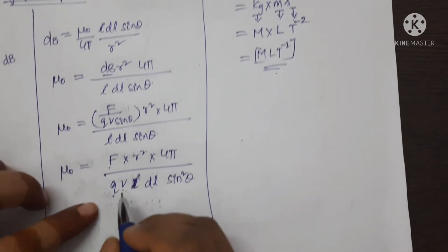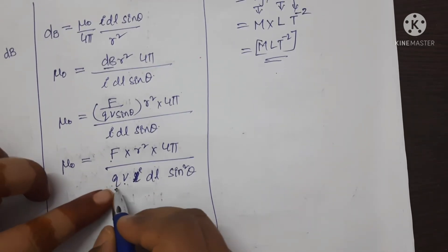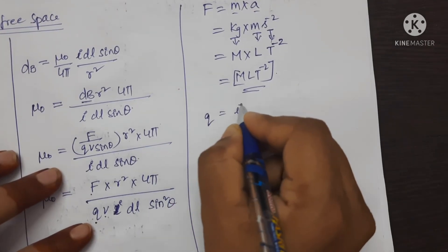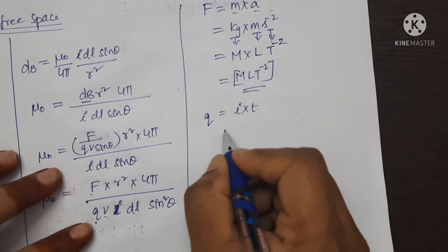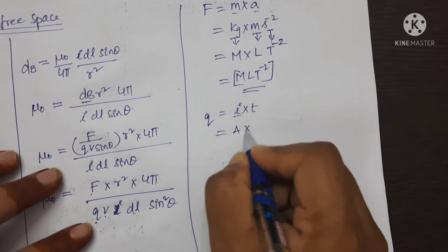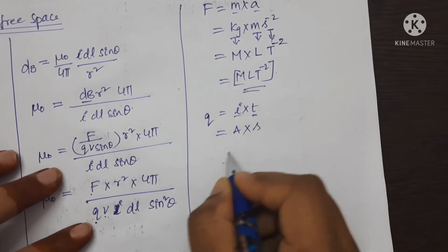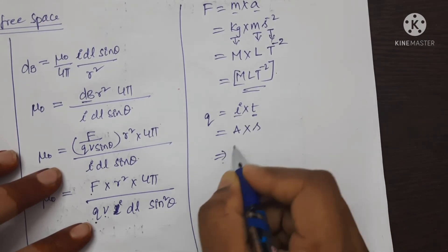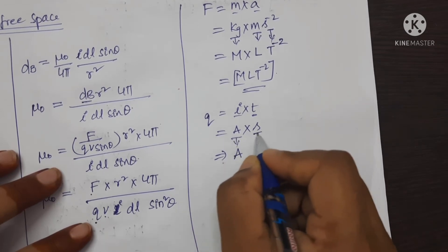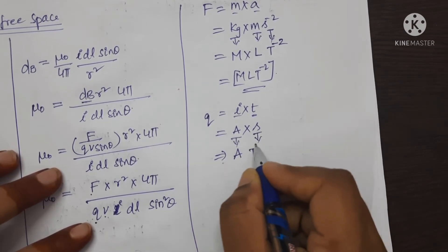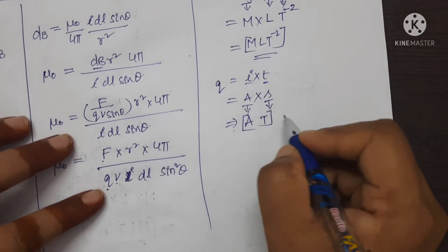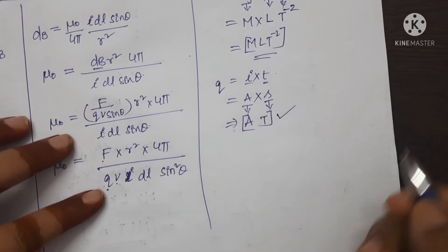Now, let us find the dimensions of charge. Charge equals current multiplied by time. The SI units are ampere and second. Writing the dimensions: ampere is A and second is T. So the dimensional formula for charge is [AT].